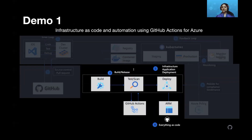Let's get into our first demo. In this demo, I would be using the same reference architecture, highlighting three steps: first, the pipeline we can create for building, testing, and deploying your application to a demo cluster. Second, everything as code - how can you store your pipeline as code in GitHub Actions and maintain your infrastructure as code using GitHub? And then we'll use that same pipeline to provision the infrastructure and deploy your application.